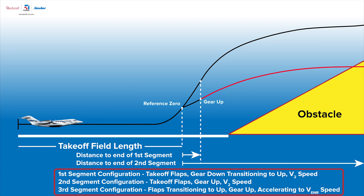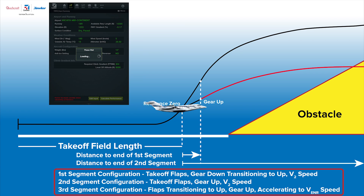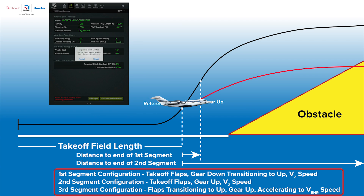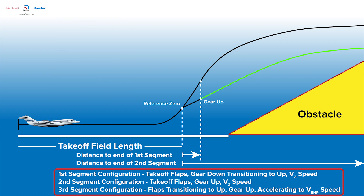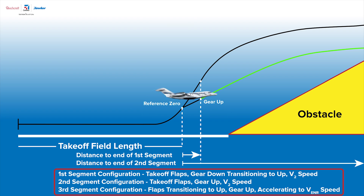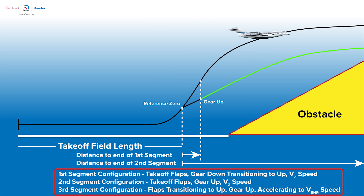When climb requirements are defined, CPCalc will calculate performance at thousands of points along the flight path to ensure that the aircraft will stay above the gradient plane. If it breaks that plane, a message will appear and you may be prompted to reduce to a specified takeoff weight, which will allow the aircraft to meet the climb requirements. iPad CPCalc and all but the earliest Windows CPCalc apps will also take advantage of the unused portion of the runway to reduce the effective climb requirement.